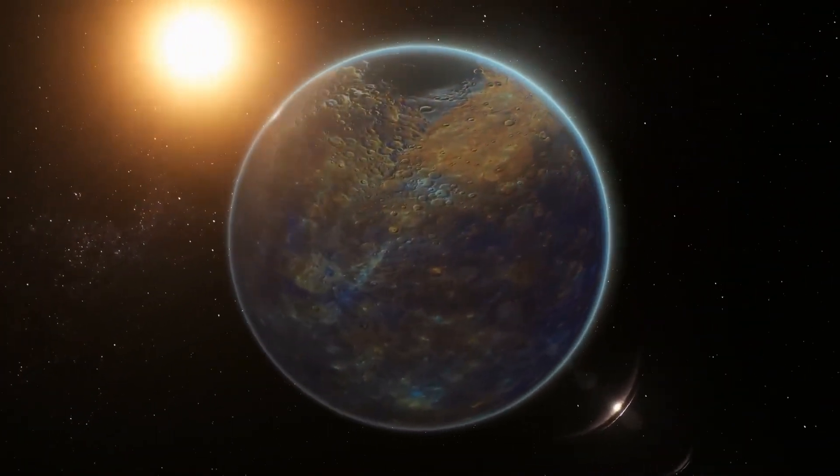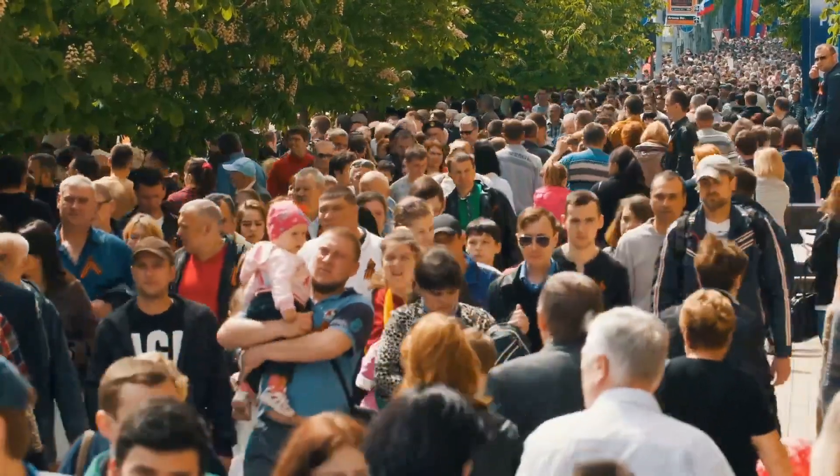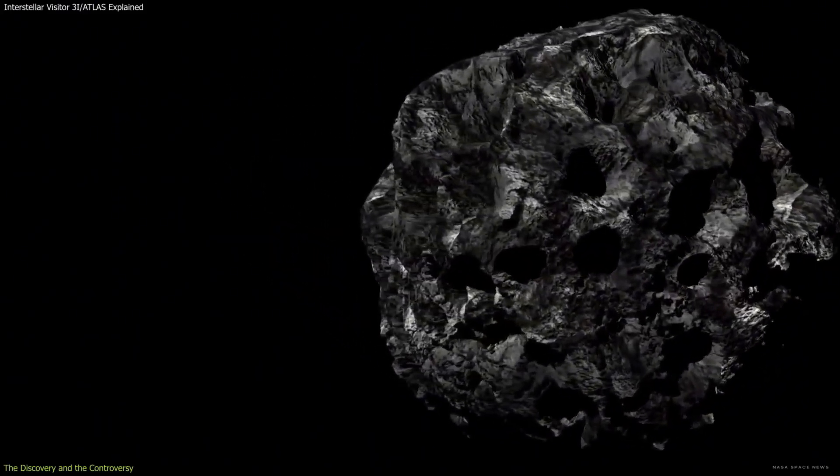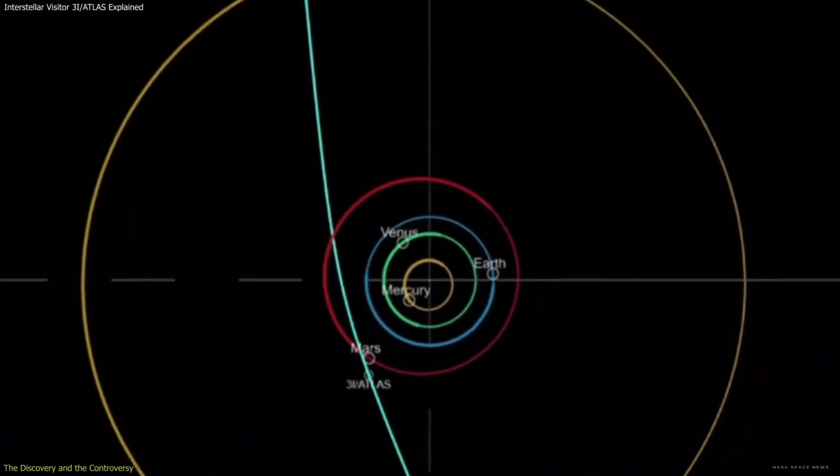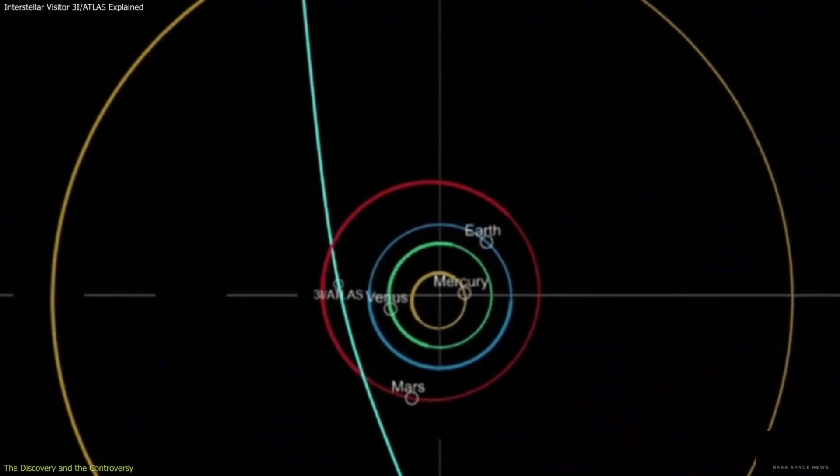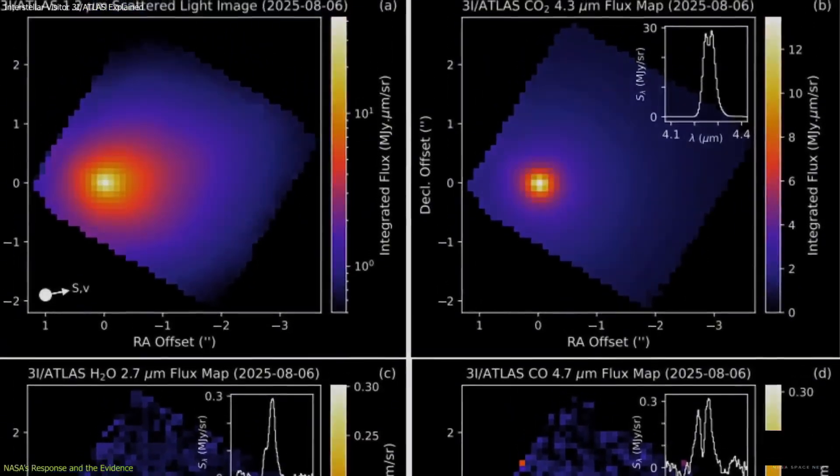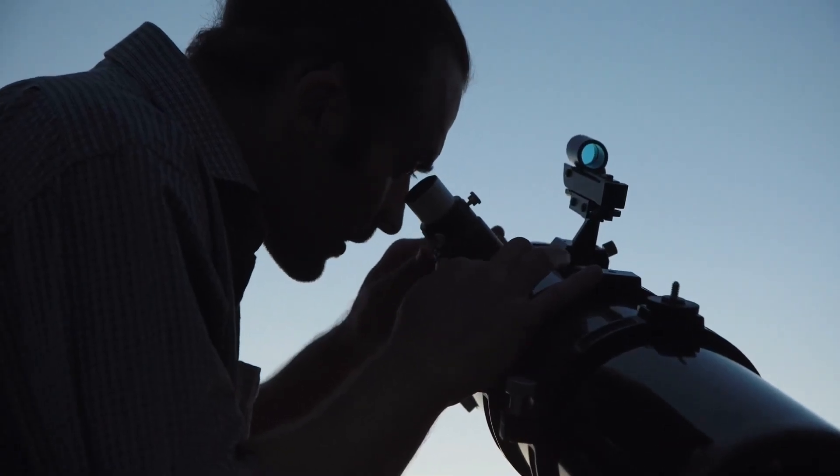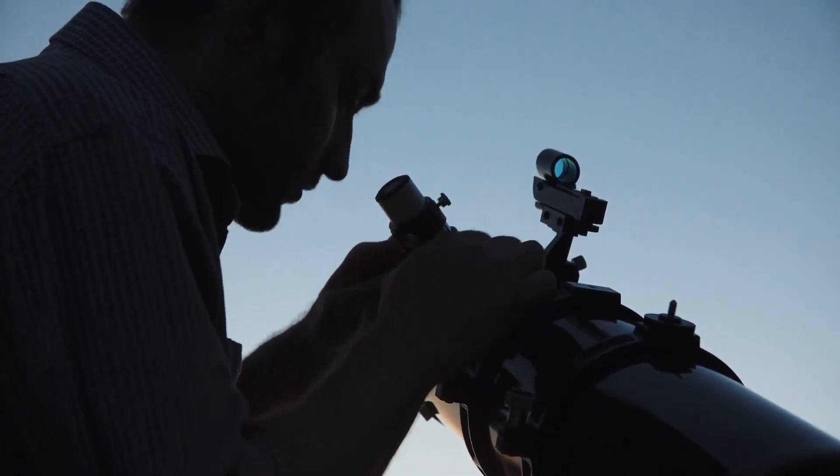Beyond the mystery of this single object lies a broader issue of preparedness. Humanity currently lacks a coordinated global framework for observing and studying interstellar visitors. Each new discovery triggers a race among national space agencies, university observatories, and amateur astronomers to collect as much data as possible before the object fades from view. In both previous cases, Oumuamua and Borisov, critical opportunities were lost because telescopes could not be aimed quickly enough or lacked the right instruments to capture full spectra. 3I Atlas, with its months-long window of visibility, represents a chance to change that narrative.